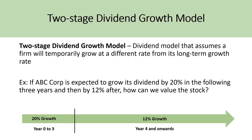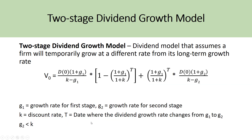A more complex example — one where a lot of students struggle — is the two-stage dividend growth model. This model assumes a firm will temporarily grow at a different rate from its long-term growth rate. For example, if ABC Corp is expected to grow its dividend by 20% in the following three years and then by 12% after, you'd have two G variables: G1 at 20% from year 0 to 3, and G2 at 12% from year 4 onwards. T is the date where the dividend growth rate changes from G1 to G2; if the first stage lasts three years, then T equals 3.